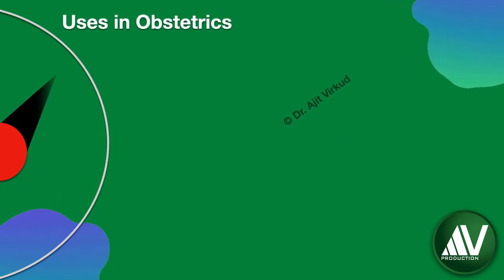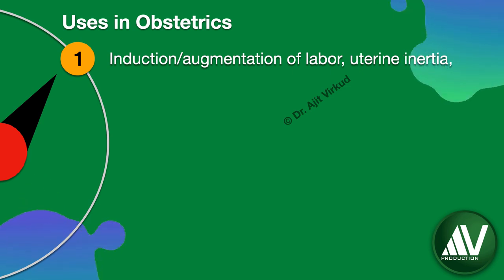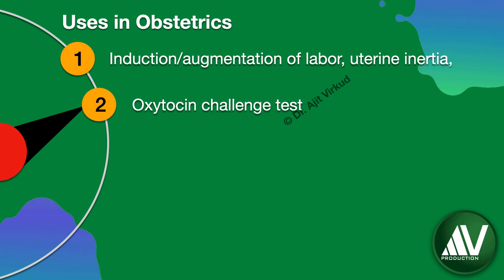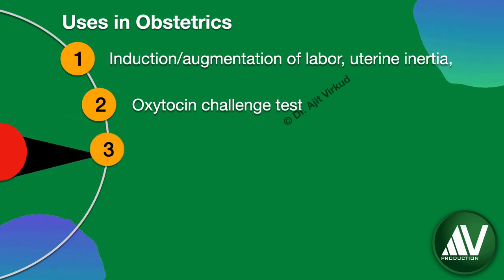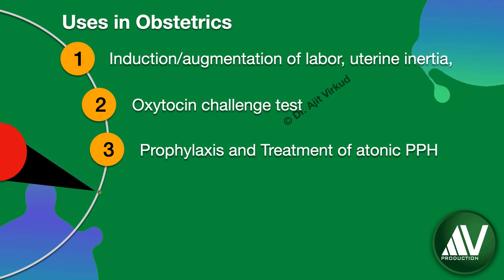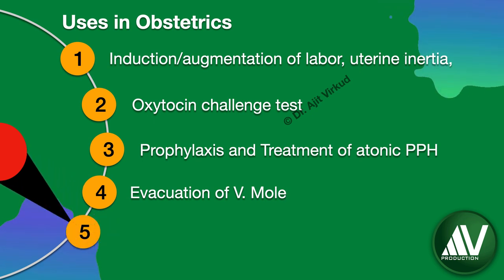Oxytocin is used in obstetrics for the following indications: induction of labor, augmentation of labor, and uterine inertia — for these three, oxytocin is given in physiological doses. Other indications include the oxytocin challenge test, prophylaxis and treatment of atonic postpartum hemorrhage, evacuation of vesicular mole, and treatment of breast engorgement.